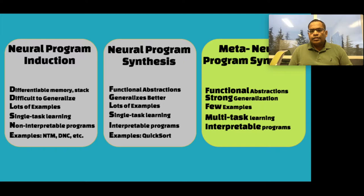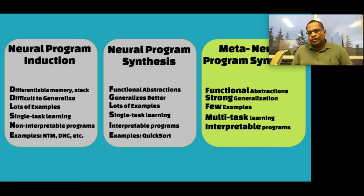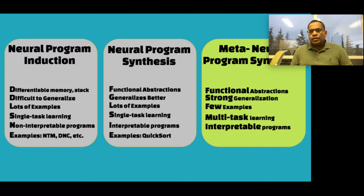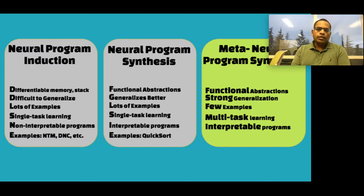If we look at what we call meta neural program synthesis, the idea is that instead of training one model per task, can we train the same model for many different tasks in a domain? The benefit is that for every task we don't need much data — we can probably learn correct programs from as few as five examples. This is closer to how humans program: given a few test cases in a constrained domain, it's typically clear what program one needs to write. I'll mostly talk about meta neural program synthesis in the next few slides.